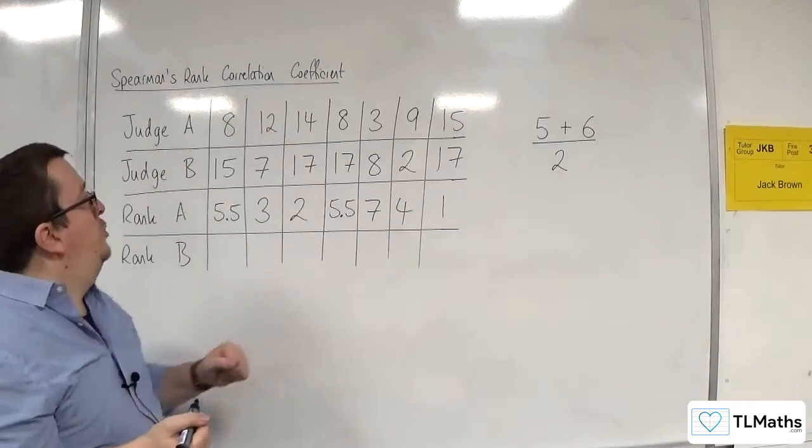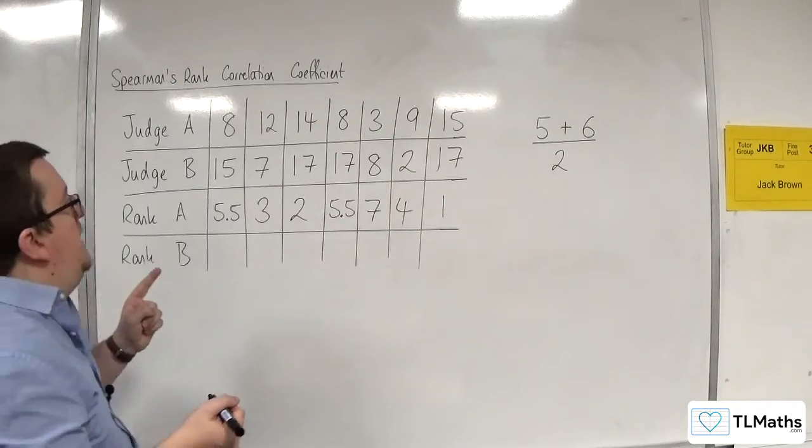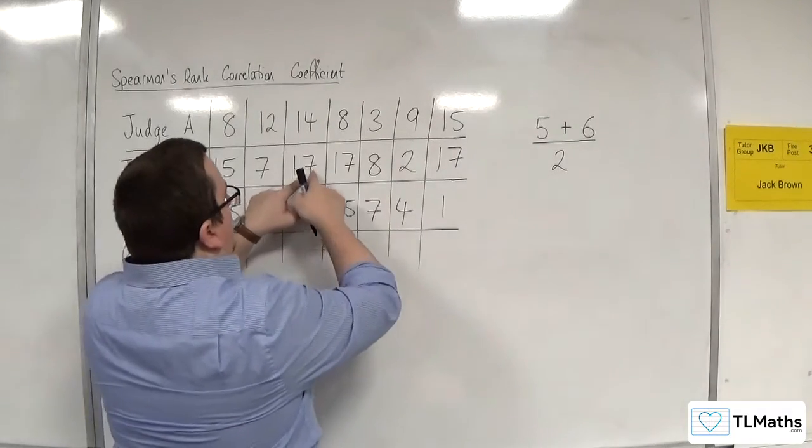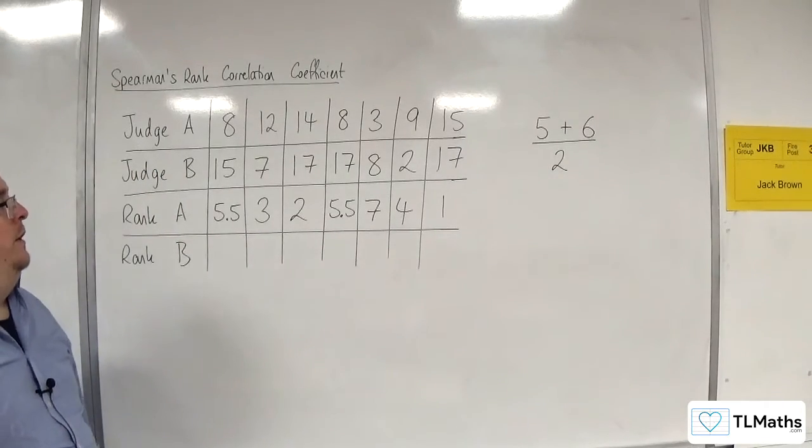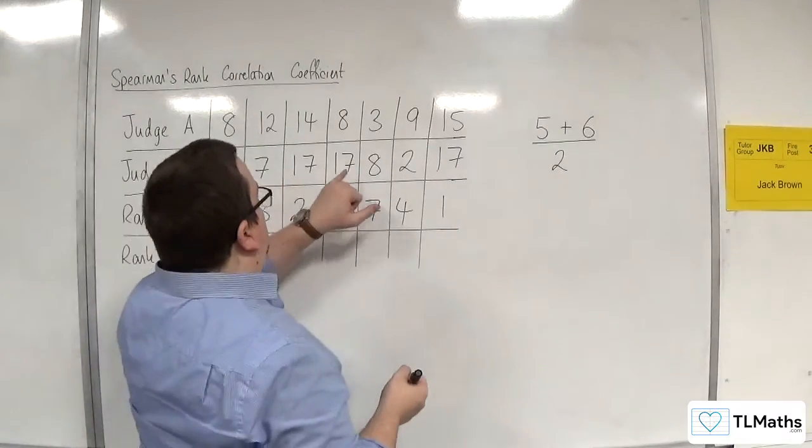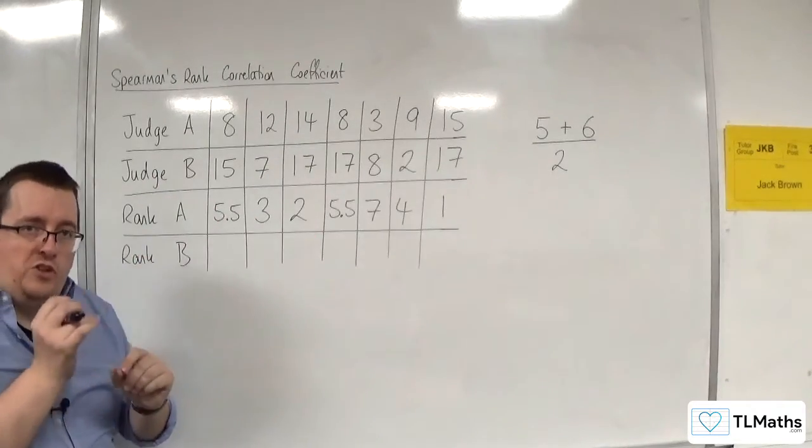Now, let's take a look at Judge B. Judge B has ranked 3 people with the highest score of 17. So, that is 1st, 2nd, and 3rd, if you imagine that they got slightly different scores each.